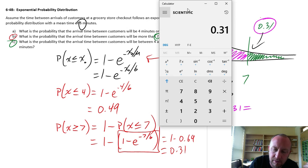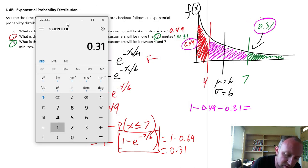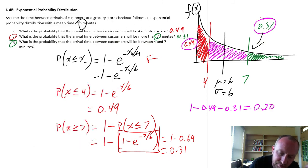This is going to be 1 minus 0.49 minus 0.31. And there we have it, 0.20.